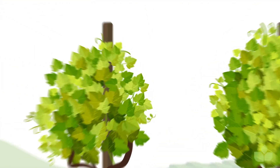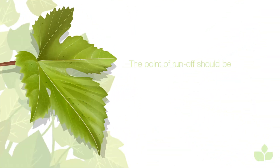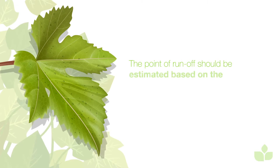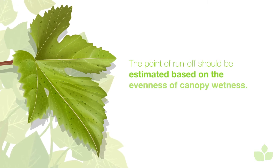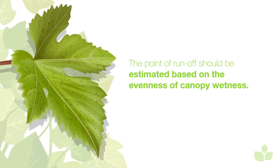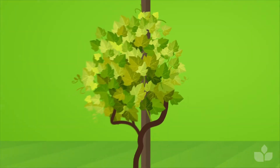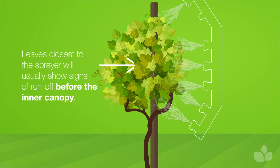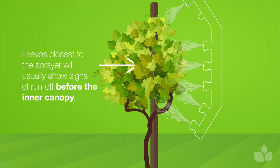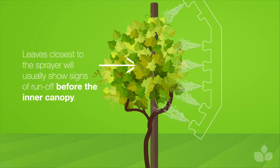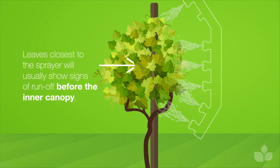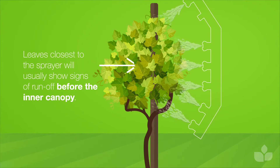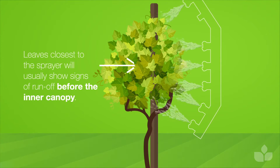The point of runoff should be estimated between the evenness of canopy wetness. The leaves closest to the sprayer will usually show signs of runoff before the inner parts of the vine canopy. The aim is to achieve adequate coverage of the inner canopy before runoff begins on the outer canopy.